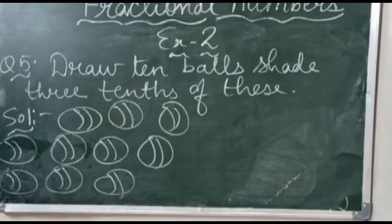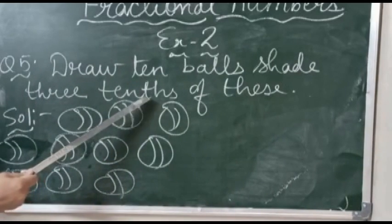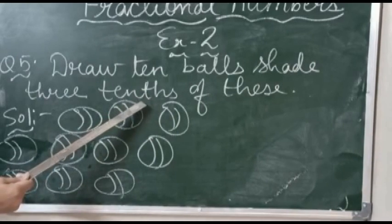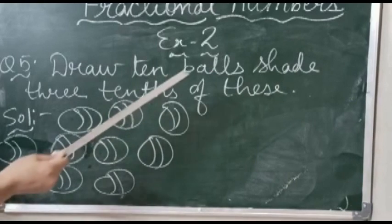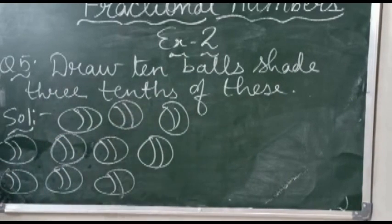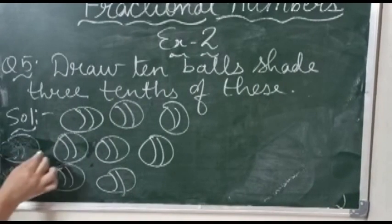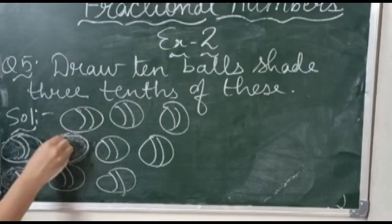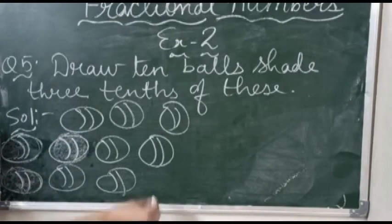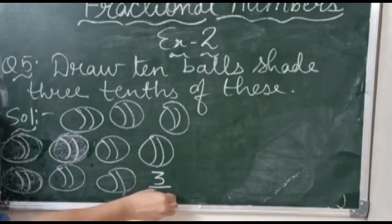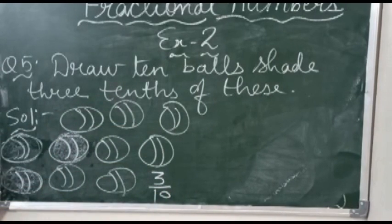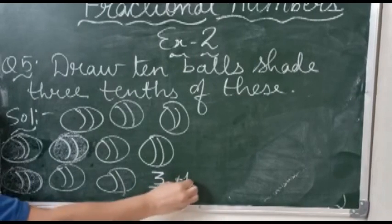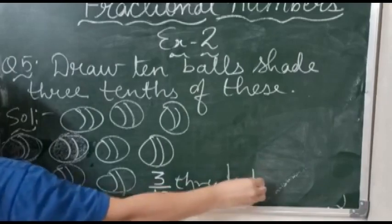The next part says shade 3-tenths. The word 'tenth' means 10 goes in the denominator. We have to shade only 3 balls: 1, 2, and 3. Now we have shaded 3 balls. So how do we write the answer? It is 3 upon 10, and we write 'tenth' in the denominator place. The answer is three-tenths.